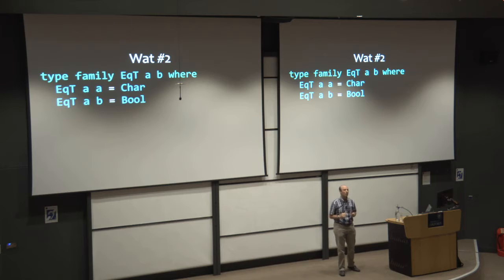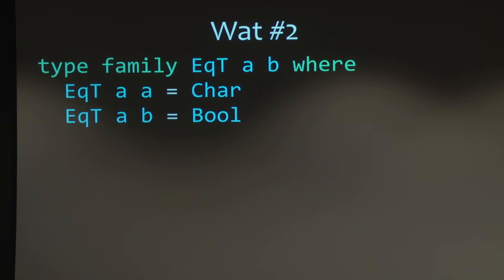Here's another example. So closed type families through its ordered equations allow us to do equality comparisons on types. So notice in the first equation, I've repeated the variable a. And so it's checking if the two arguments to ect are the same, then I'm going to reduce to char. If they're different, then I'm going to reduce to bool. And I might write a function that looks like this. And so here, I'm checking, does a equal maybe a? And in the body of my function, I'm saying false. And of course, this should type check because a does not equal maybe a. And so if a does not equal maybe a, this type family says that that should reduce to bool. And so false is of type bool. So this should type check.